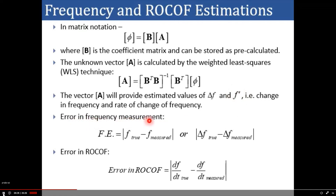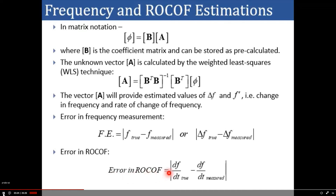To calculate the error in frequency measurement, the frequency error is given by |true frequency − measured frequency|, or equivalently |delta f true − delta f measured|. To calculate the error in rate of change of frequency (ROCOF), the error is |df/dt true − df/dt measured|.